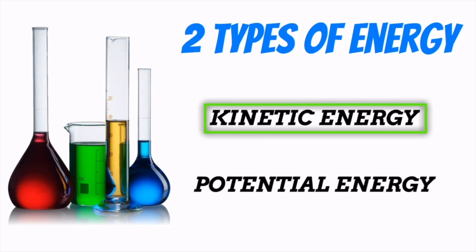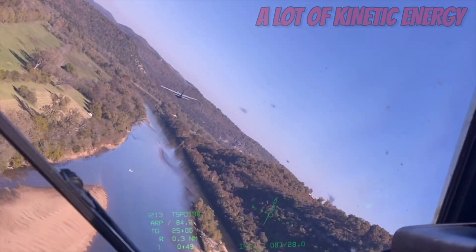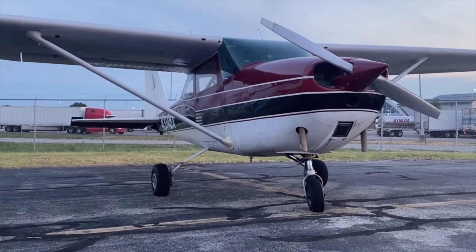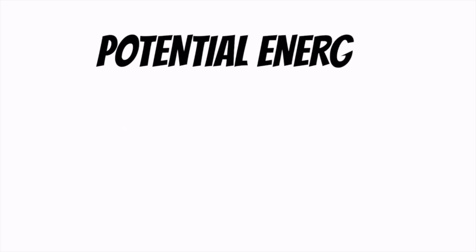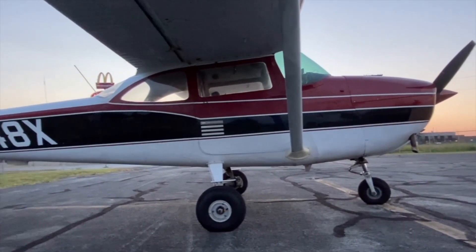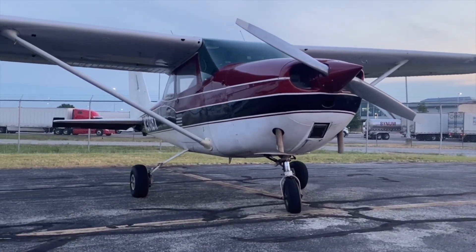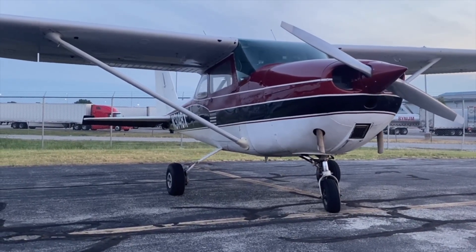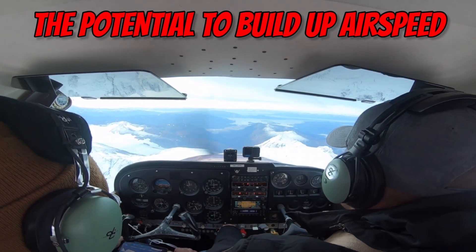Kinetic energy is the energy that an object has if it is already in motion. For example, if I'm flying at 200 knots in my C-130 here, I've got a lot of kinetic energy. But an airplane that's just sitting on the ground has no kinetic energy. So when it comes to flying, the more airspeed we have, the more kinetic energy we have. Then there's potential energy — this is the ability of an object to create kinetic energy based on its position. Our airplane sitting on the ground doesn't have a ton of potential energy.